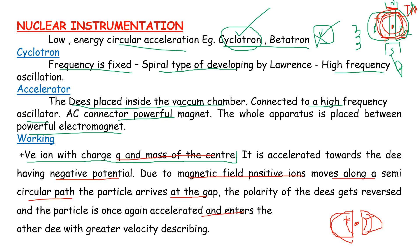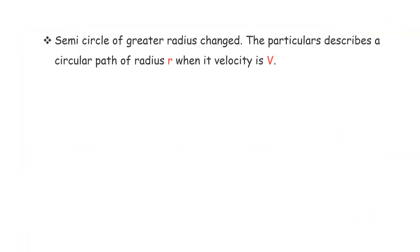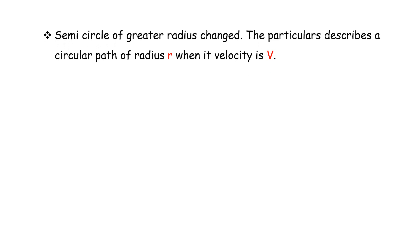The particle enters the other D with greater velocity and describes a semicircular path. With each acceleration, the velocity increases and the radius of the semicircular path changes — it becomes larger each time.